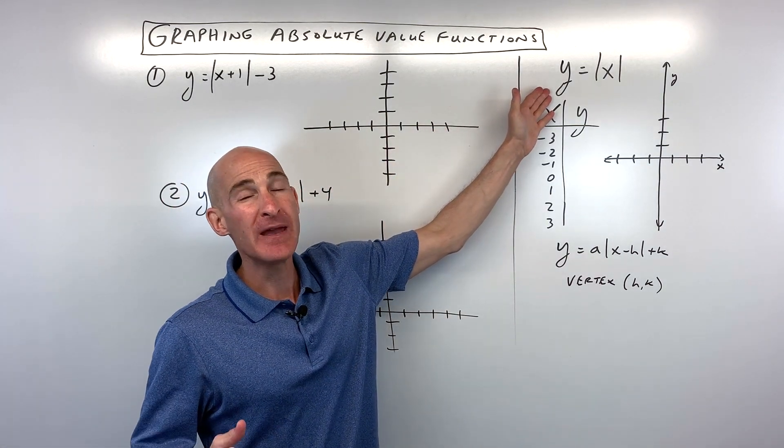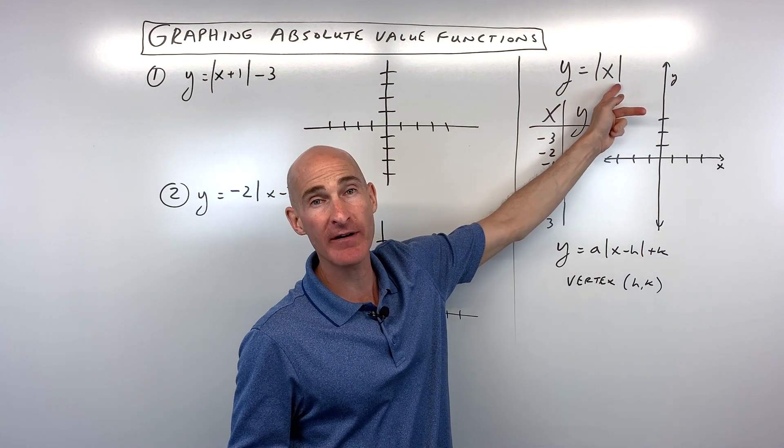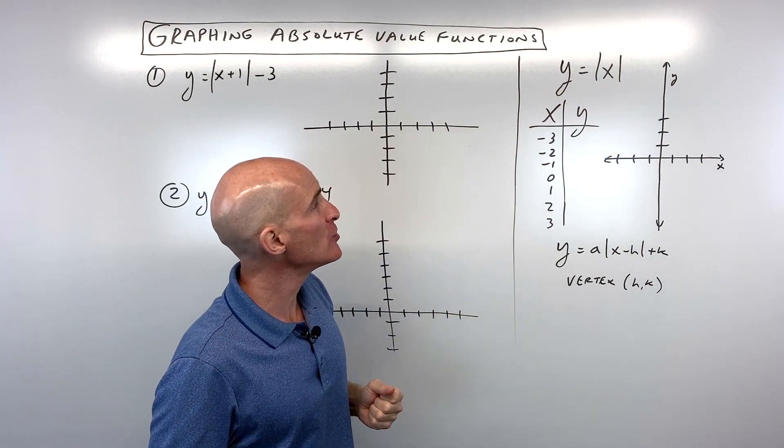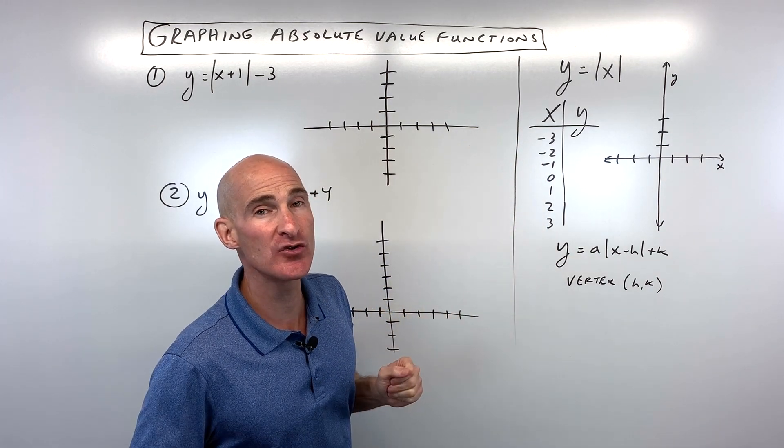The first thing you want to know is the basic shape of the parent function, this y equals absolute value of x graph. And the way you would get points for this graph is by picking a few negatives, zero, and a few positives. So let's go ahead and do that.